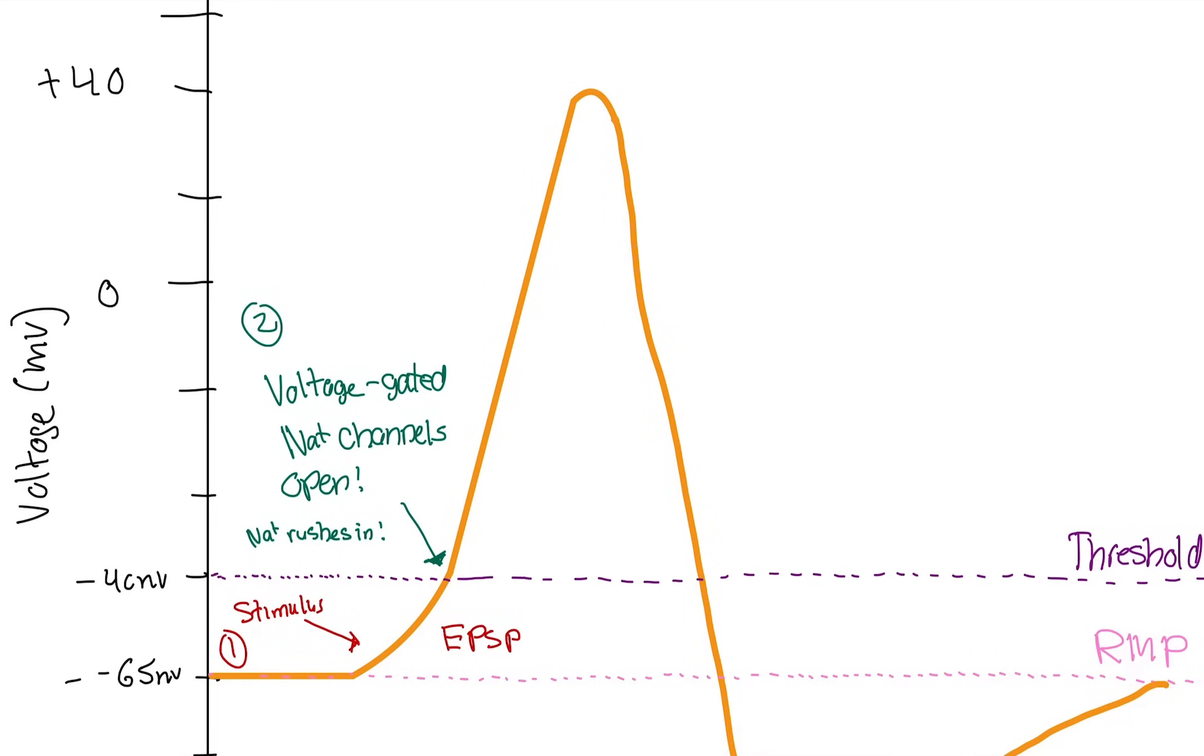So this is called depolarization. Depolarization. So at this point is when the action potential actually fires. That electrical signal from the axon hillock or wherever on the axon, it fired. So the electrical signal is traveling along the neuron. At that point, the second it hits that threshold, it gets sent.